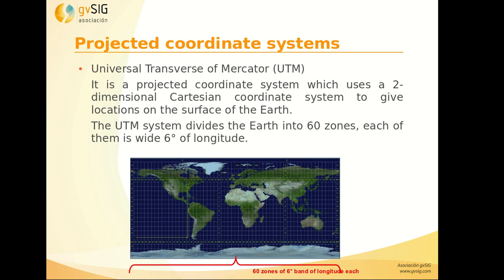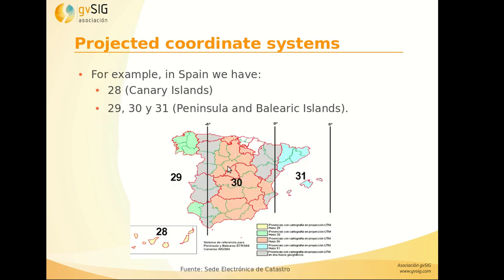Each zone is six degrees of longitude, from west to east. Here we can see the whole world divided this way. In the case of Spain, we can see that almost all of Spain is in zone 30. There are several regions in zones 29 or 31 — for example, when working with all of Spain we usually work in zone 30, but people from Galicia, when working with their local cartography, work in zone 29.